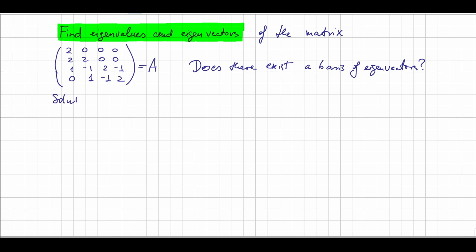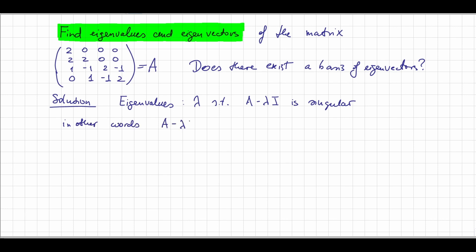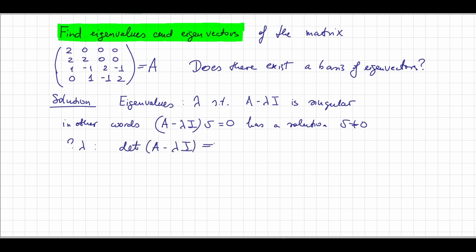So the solution. Let us remember that the eigenvalues are all lambda such that the matrix A minus lambda E is singular. In other words, (A minus lambda E) times vector v equals 0 has a solution different from 0. We know that this can be decided by the determinant, so we are looking for all lambda such that the determinant of A minus lambda E is equal to 0.